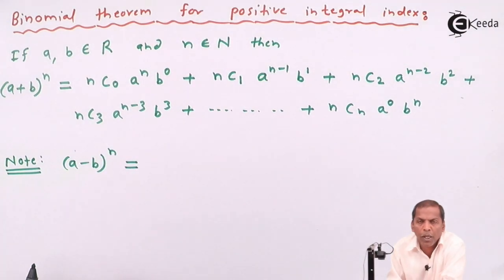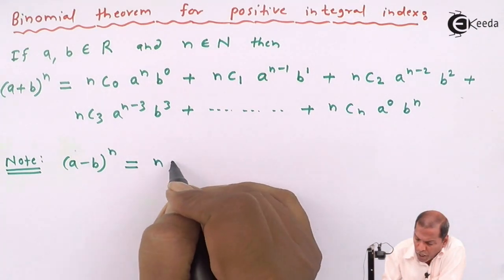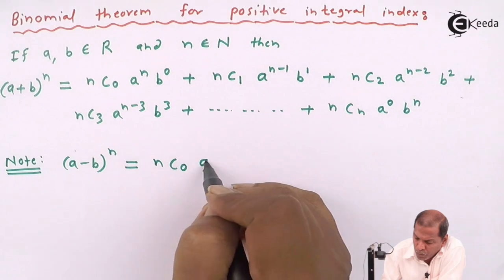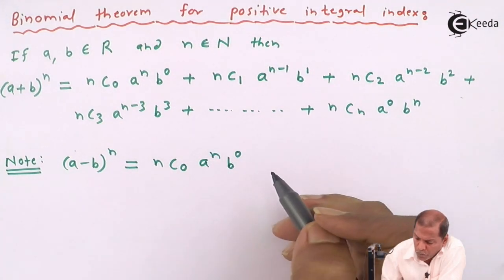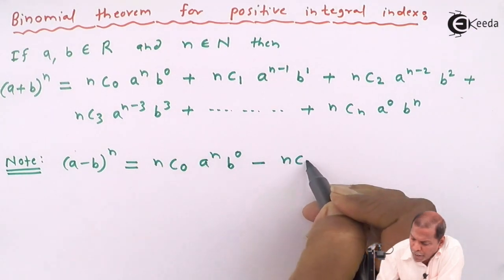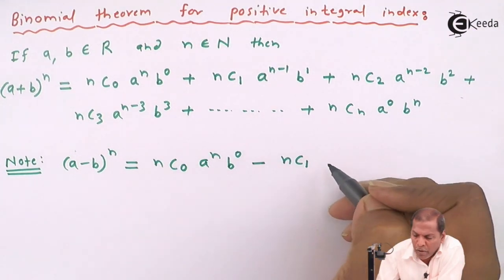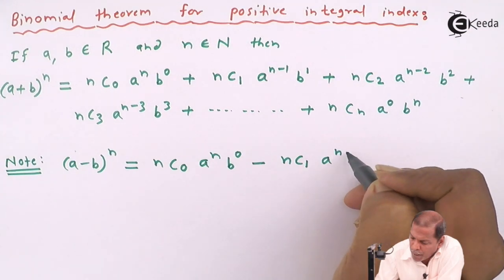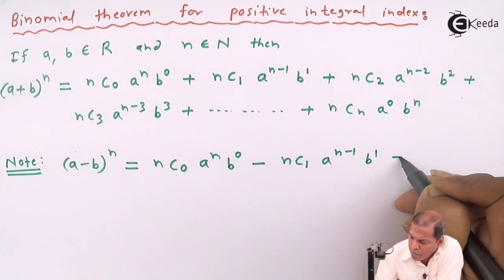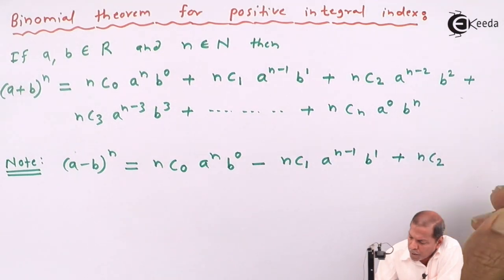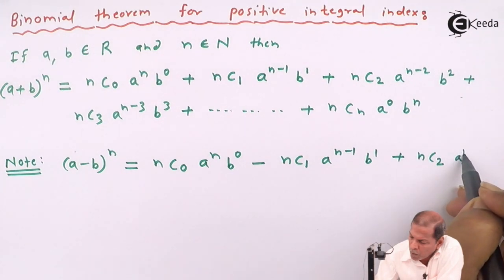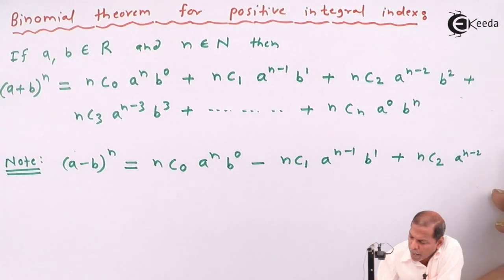Then by using the binomial theorem, we get nC0 a^n b^0 plus nC1 a^(n-1) b^1 plus nC2 a^(n-2) b^2...